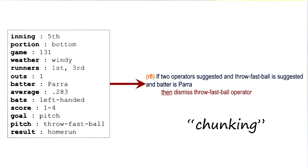Chunking is triggered when an impasse occurs. In this situation, the impasse is that two rules got activated and there is no way of resolving between them. The impasse immediately tells the chunking process what its goal is: find a rule that can break the impasse. Soar now searches through its episodic memory and finds an event that has some knowledge that may break the impasse.